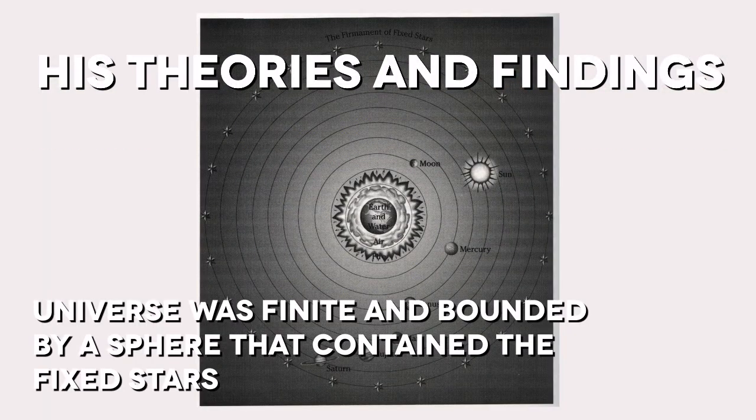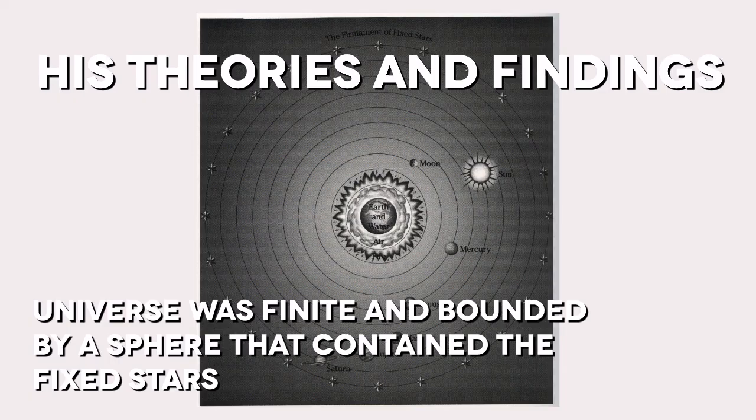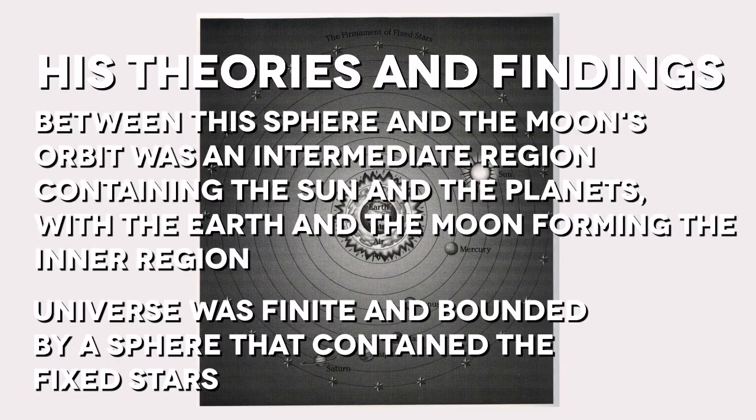Aristotle also reasoned that the universe was finite and bounded by a sphere that contained fixed stars. Between this sphere and the moon's orbit was an intermediate region containing the sun and the planets, with the earth and the moon forming the inner region.